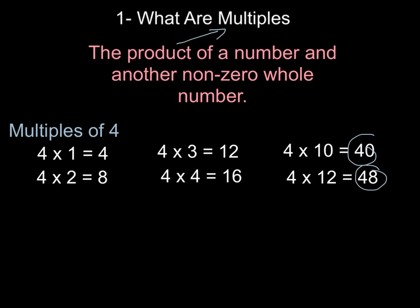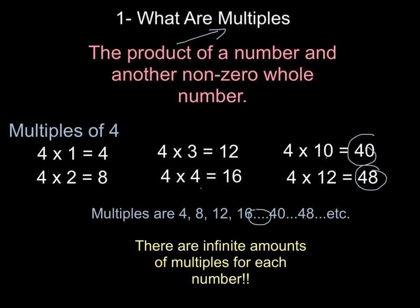So that gives us our answer that our multiples of four are four, eight, twelve, sixteen, forty, et cetera. Now the reason I have these dots is because there are still other numbers between four and ten that four can be multiplied by. Actually, four can be multiplied by any whole number. Thus, there are infinite amount of multiples for each number.